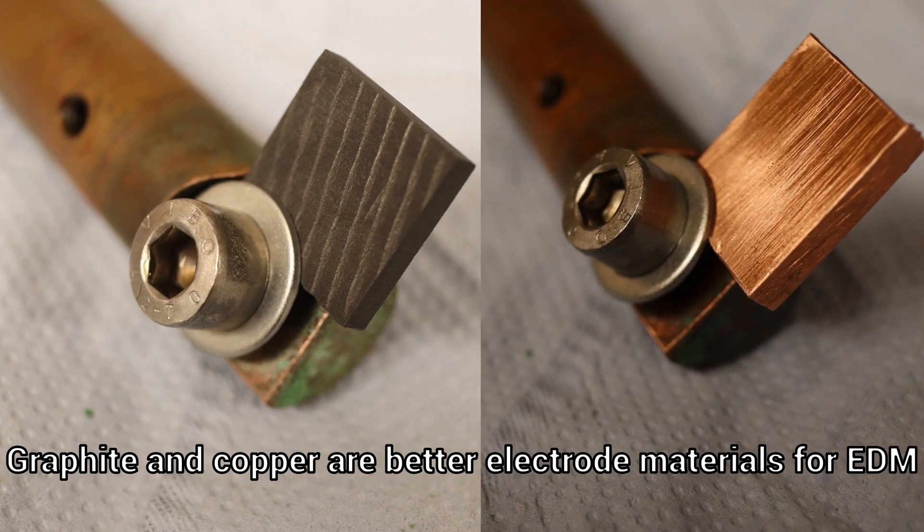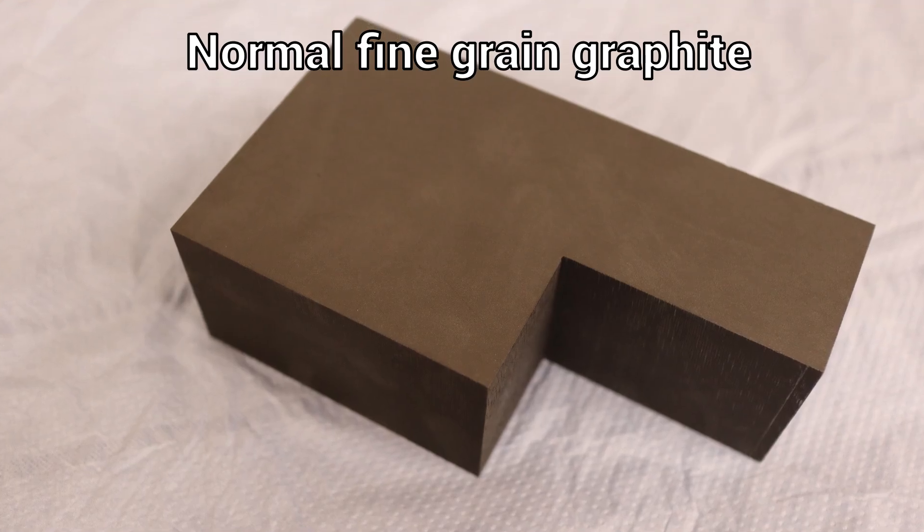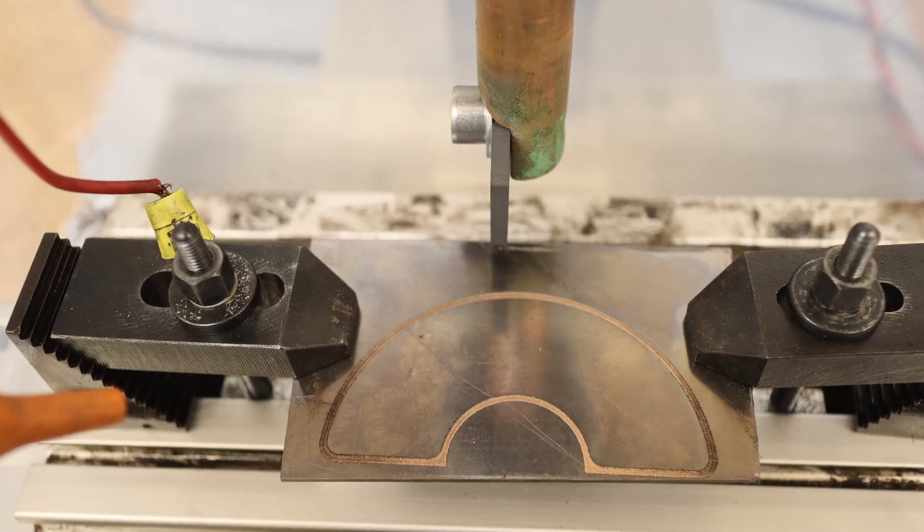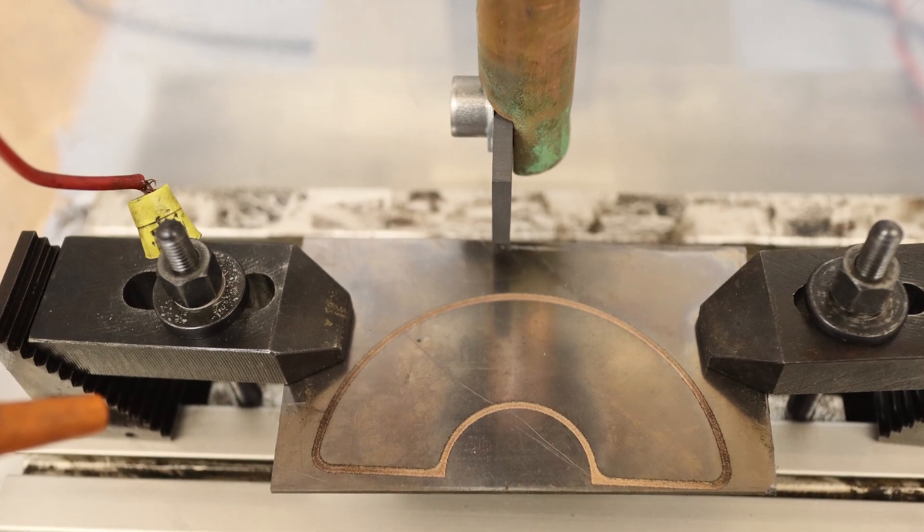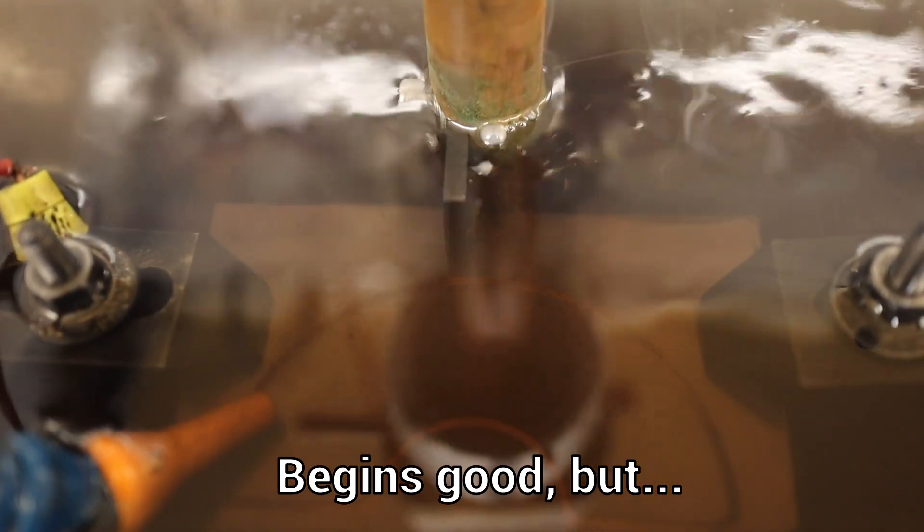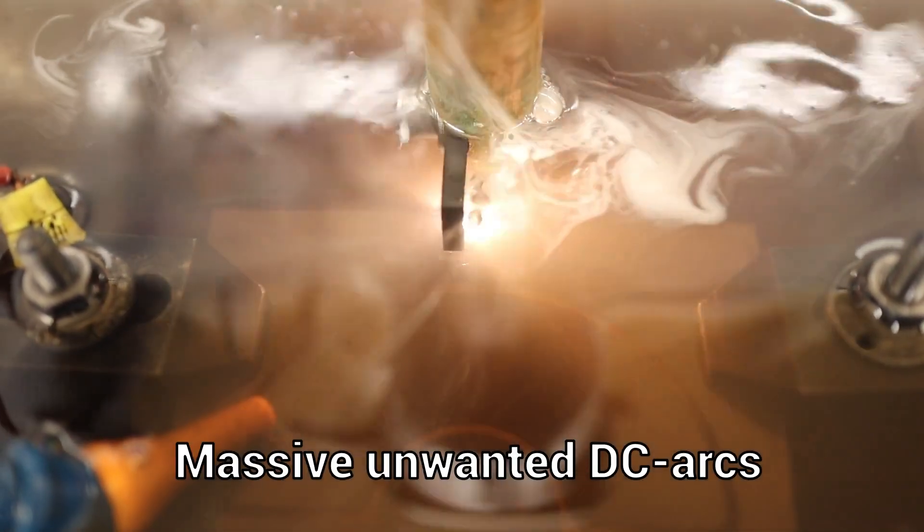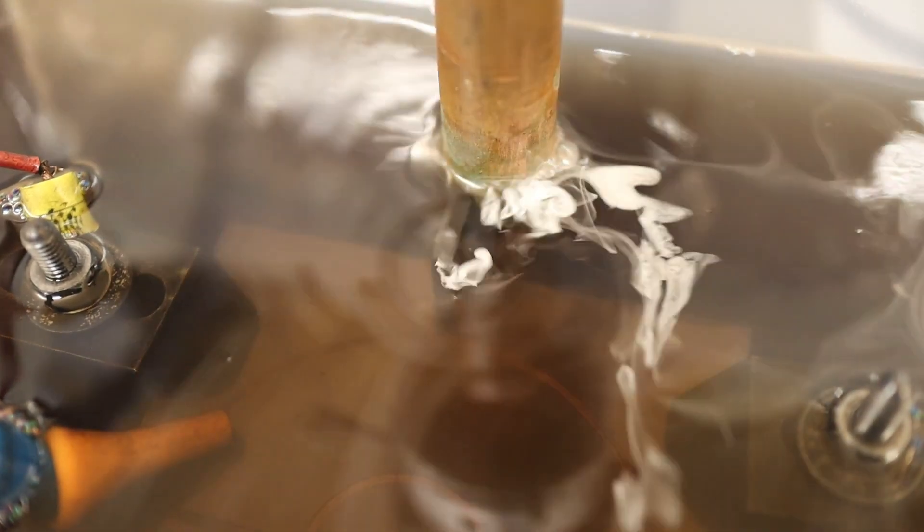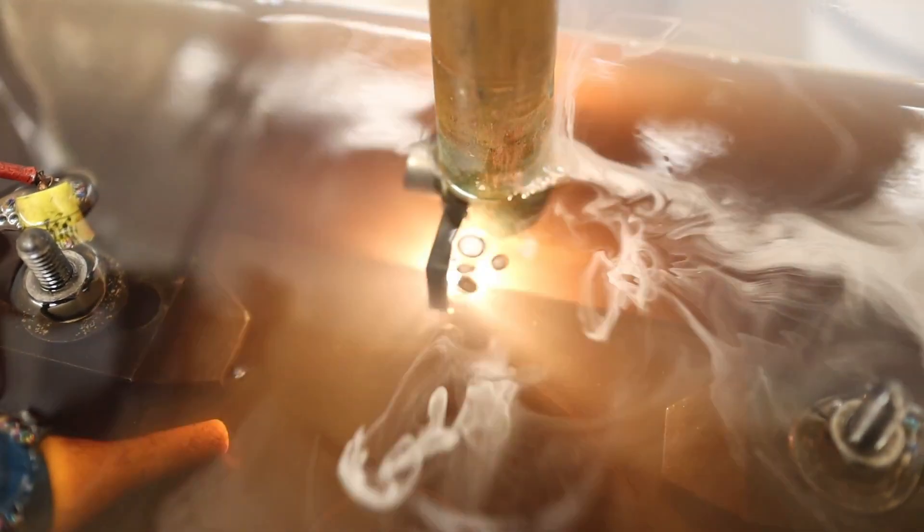As I no longer had any special EDM graphite and also wanted to save the cost and time of ordering it, I used the fine grain graphite I already had. This showed a very poor spark pattern during erosion, and after a short time I stopped the experiment as changing the parameters did not bring any improvement. The type of graphite did not seem to be so suitable.